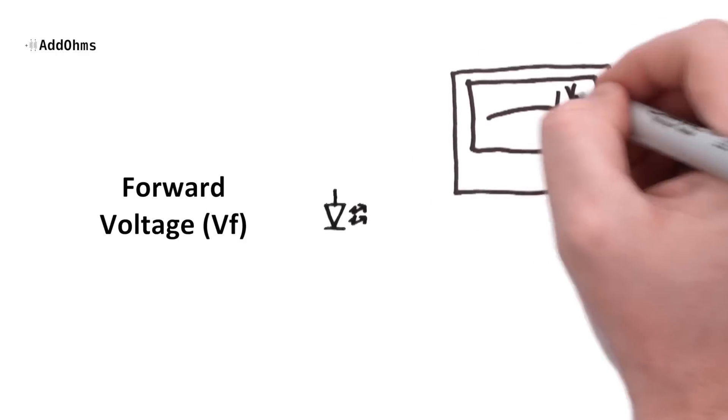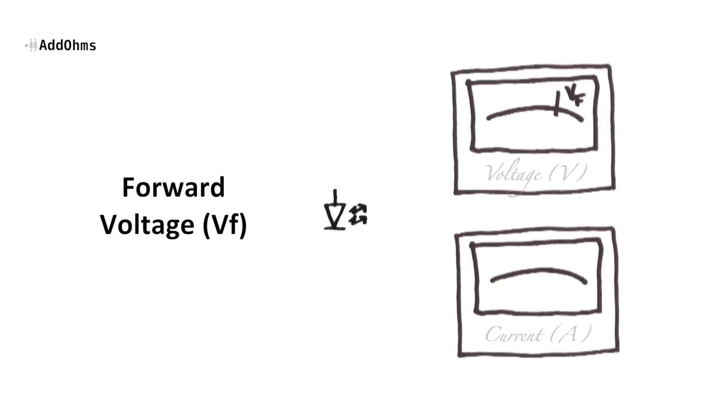LEDs, on the other hand, work a little bit different. A key parameter of all diodes, including LEDs, is their forward voltage. This is the voltage required for the LED to become conductive. Basically, what this means is that no current will flow through this LED until at least that much voltage is present.